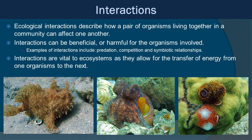Ecological interactions describe how a pair of organisms living together in a community can affect one another. Interactions can be beneficial or harmful for the organisms involved. Examples include predation, competition, and symbiotic relationships. Interactions are vital to ecosystems as they allow for the transfer of energy from one organism to the next — essentially a preview of the food chain. Examples shown include a frogfish with a lure coming out of its head to attract prey, an octopus that is great at scavenging and mimicking environments, and Christmas tree worms that filter feed from the water while embedded in coral.